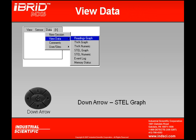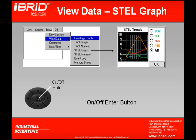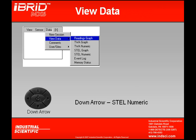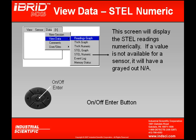If I hit the down arrow from TWA numeric, what will come up next is my STEL graph. The STEL graph will then graphically show me my readings over the past 15 minutes. By pressing the down arrow from my STEL graph, STEL numeric will come up. STEL numeric will once again show me numerically my STEL readings. Of course, oxygen and combustible gases have no STEL, therefore grayed out in their space will be the letters NA.